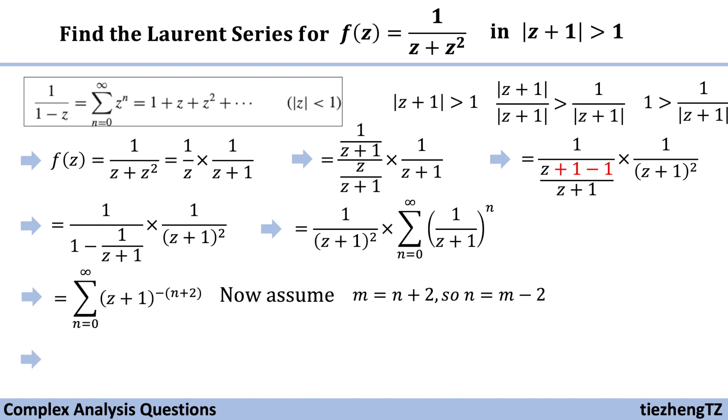The Laurent series format becomes sum, m starts from 2 because when n is 0, m is 2. So m starts from 2 to infinite and then it becomes z plus 1 to the power of minus m. So that's it. This is the Laurent series for this given function in this given domain.